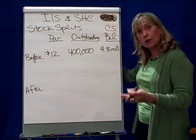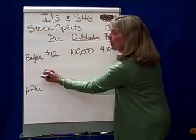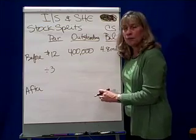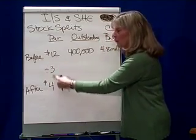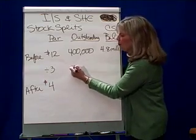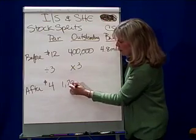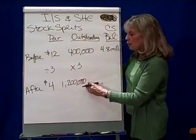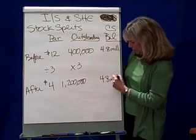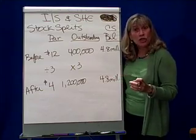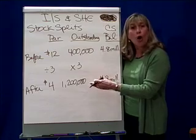So, $4.8 million. Now, with a 3-for-1 stock split, here's how it works — dear diary, today we had a 3-for-1 stock split. That means we divide the par value by three, so the par value is going to be only $4 afterwards, because 3 times 4 is 12. And the number of shares outstanding, we multiply by three, because it was a 3-for-1 — so 3 times 400,000 is 1,200,000 shares. If I take $4 times 1.2 million shares, I get the same balance in my common stock account: $4.8 million. And that is why there's no journal entry — because the balance in common stock doesn't change. It's just the par value and the shares outstanding that are altered by the split.